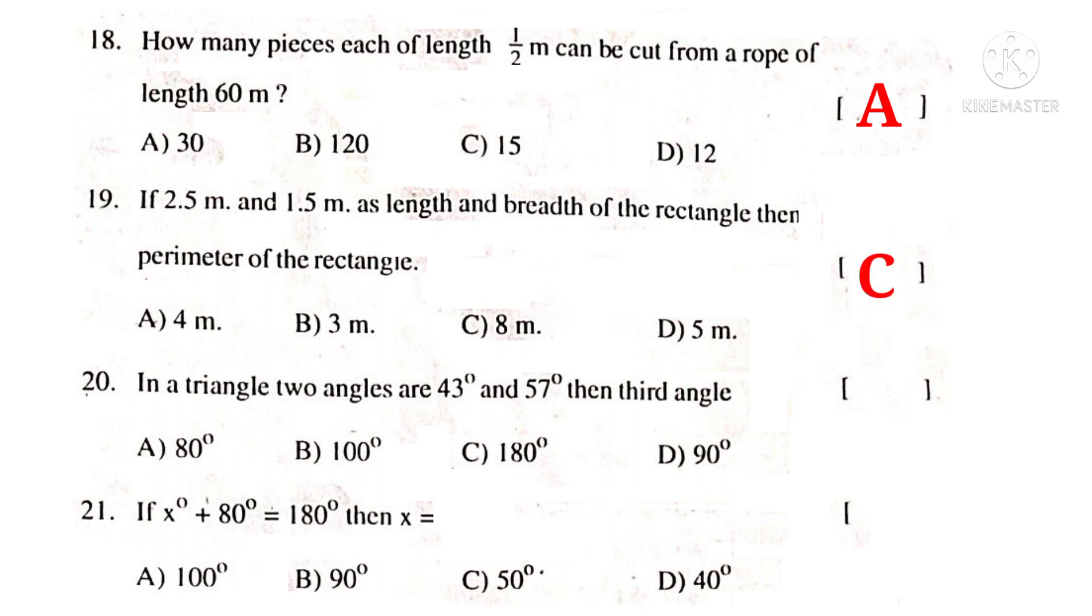In a triangle, two angles are 43 degrees and 57 degrees. Then, third angle is. Third angle is obtained by subtracting the sum of the given angles from 180 degrees. So, 180 degrees minus 43 plus 57 degrees which is equal to 180 degrees minus 100 degrees which gives 80 degrees is the answer. So, the correct choice is A.